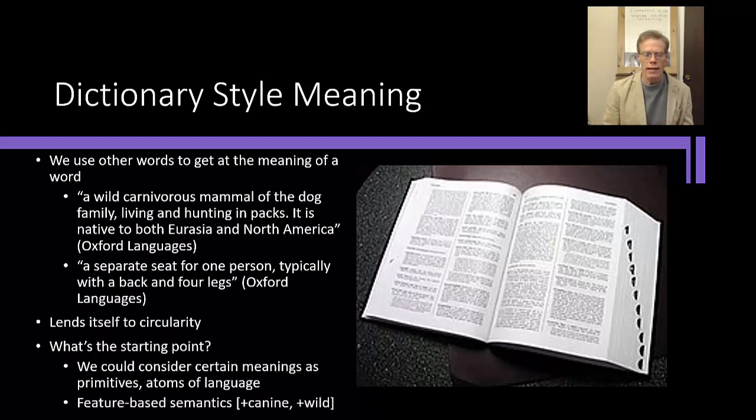And that sort of approach lends itself well to a feature-based semantics, where we could define a wolf in terms of certain characteristics, certain features that it has, that it's plus canine, that it's plus wild. And being plus canine also means that it's going to be plus mammal, and plus mammal means that it's going to be plus animal and so on. So we get certain features that go together that imply other features. That's a very prominent way of doing lexical semantics in linguistics.